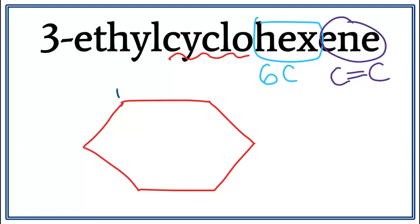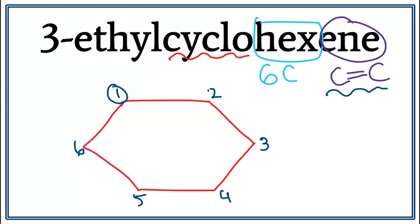Let's number these carbons: one, two, three, four, five, and six. We have a double bond present, and we don't see a number. When we don't see a number, this means it is present on the first carbon — cyclohexene means there is a double bond between the first and the second carbon. Let's draw the double bond between the first and the second carbon.